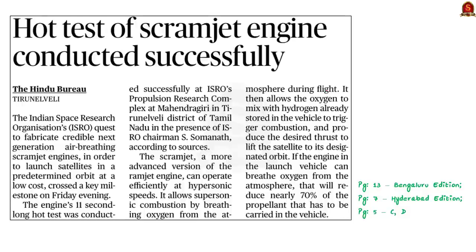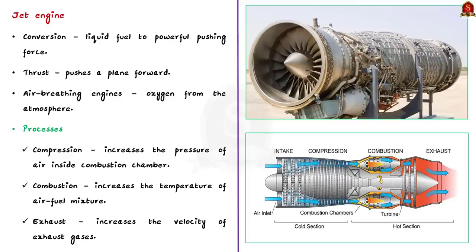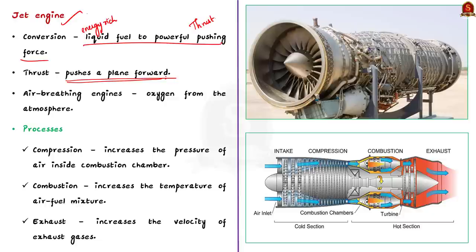The next article: ISRO has conducted the hot test of a scramjet engine at ISRO's Propulsion Research Complex at Mahindragiri in Tirunelveli district of Tamil Nadu, and the test was successful. To understand the scramjet engine, we must first know about the jet engine. A jet engine converts energy-rich liquid fuel into a powerful pushing force called thrust, which pushes the plane forward. Jet engines are also known as air-breathing engines — they get their oxygen from the atmosphere, with no need for a separate oxygen supply for combustion.